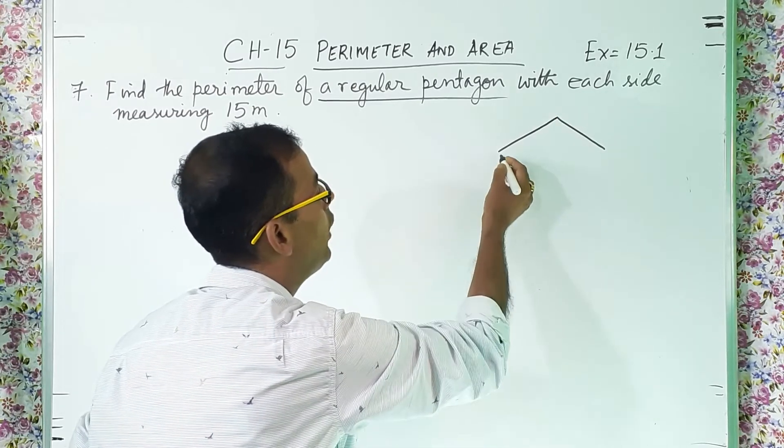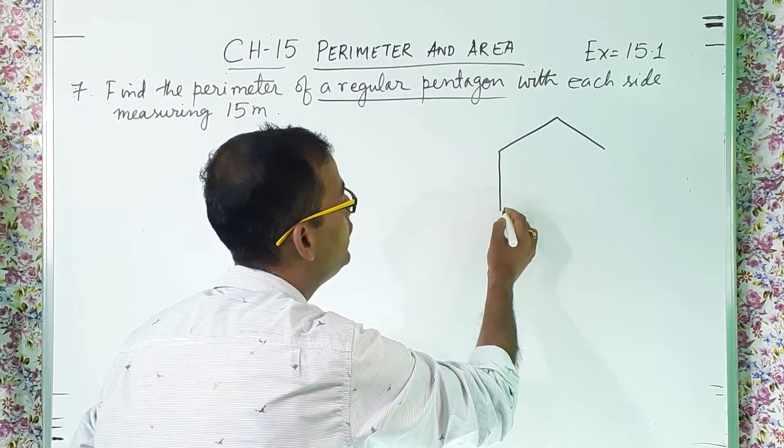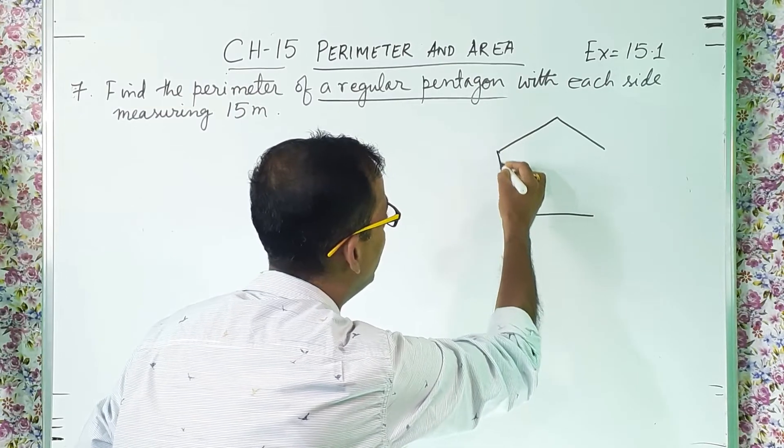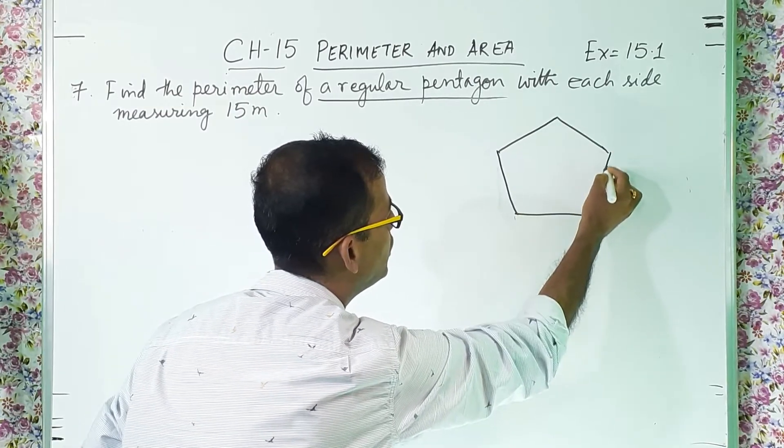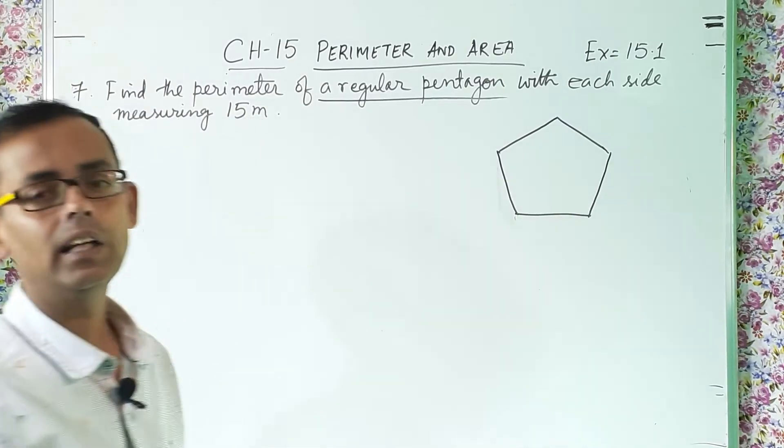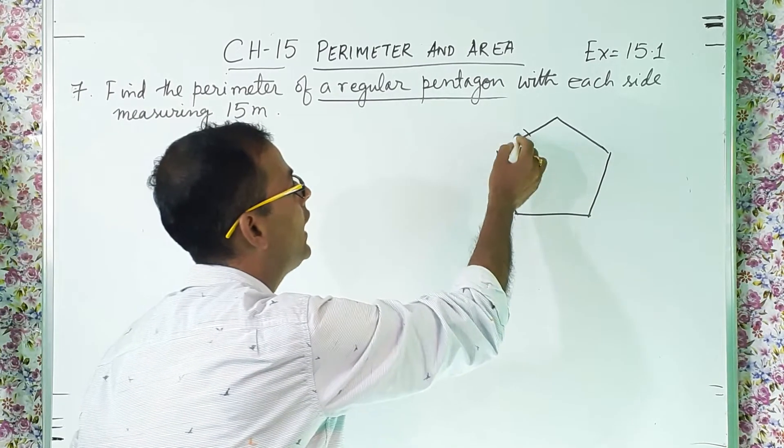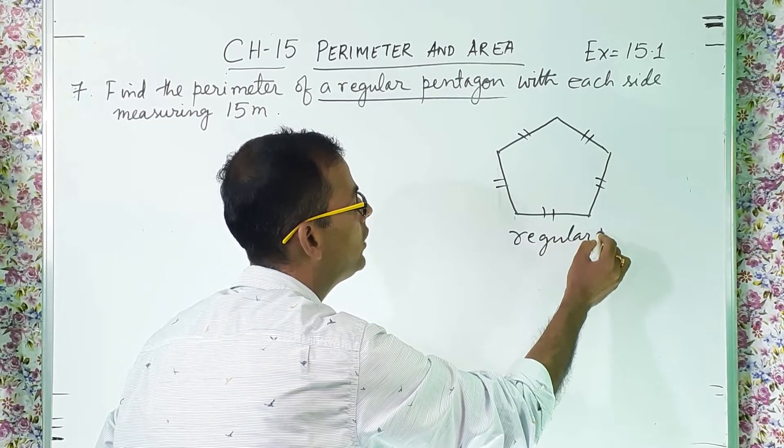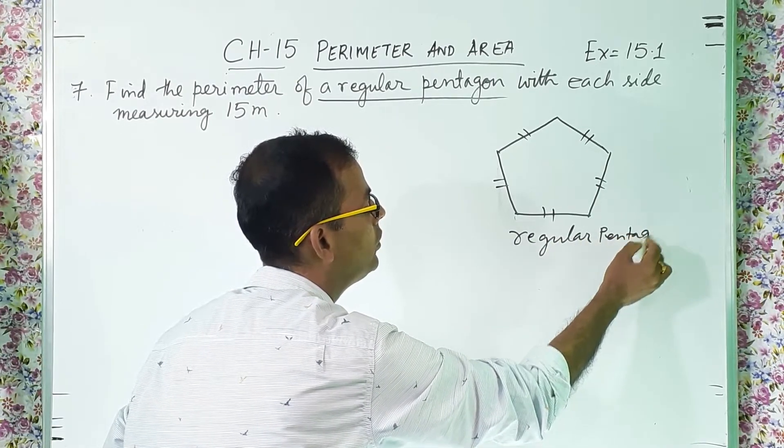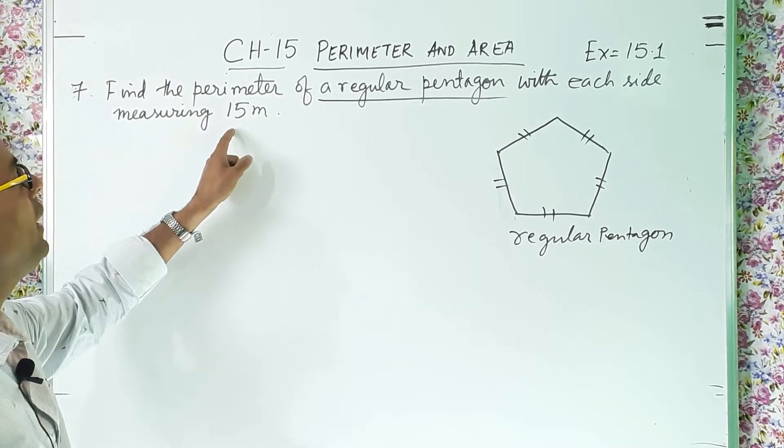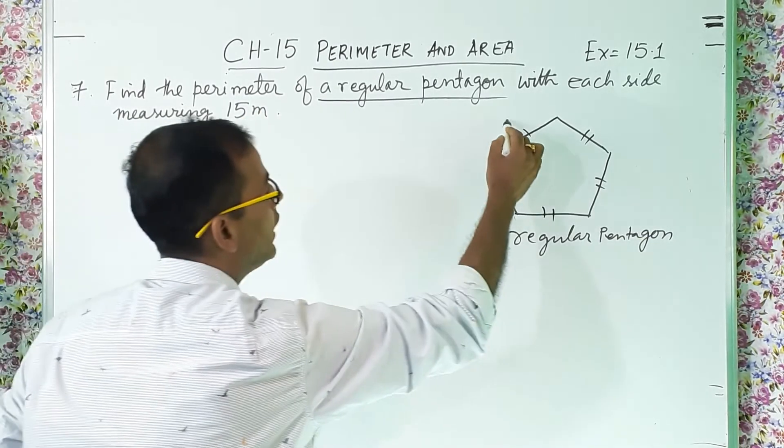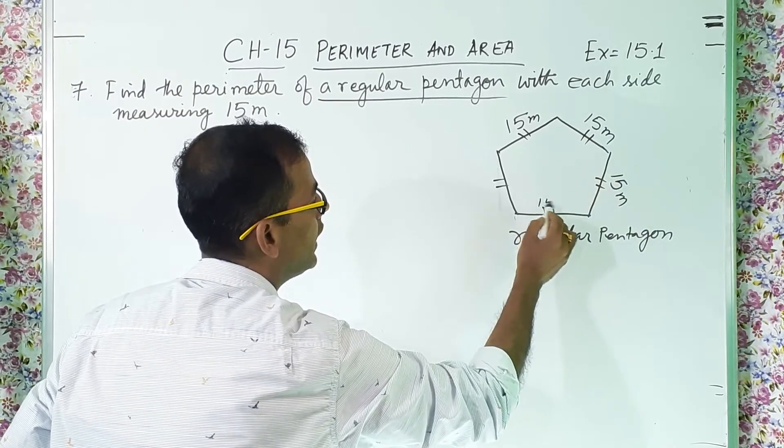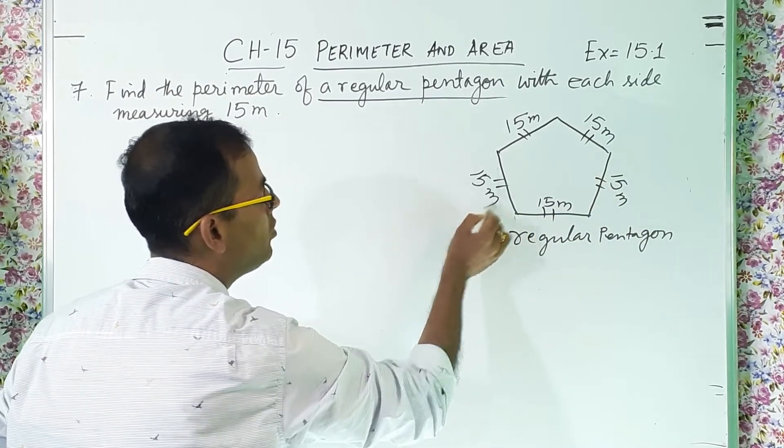So if I want to draw a pentagon 1, 2, 3, 4, we will make it little, now it is almost okay. So this is a regular pentagon and all the sides are equal. What is the measure of each side? 15 meter. That means this is also 15 meter, this is 15 meter, this side is also 15 meter, this side is also 15 meter, this side is also 15 meter.